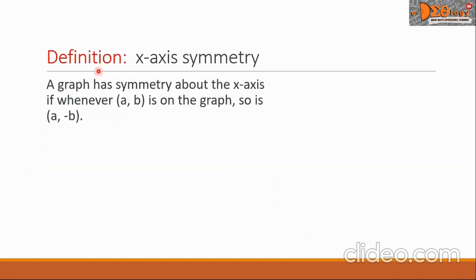First, let us define x-axis symmetry. A graph has symmetry about the x-axis if whenever the point (a, b) is on the graph, so is the point (a, -b).